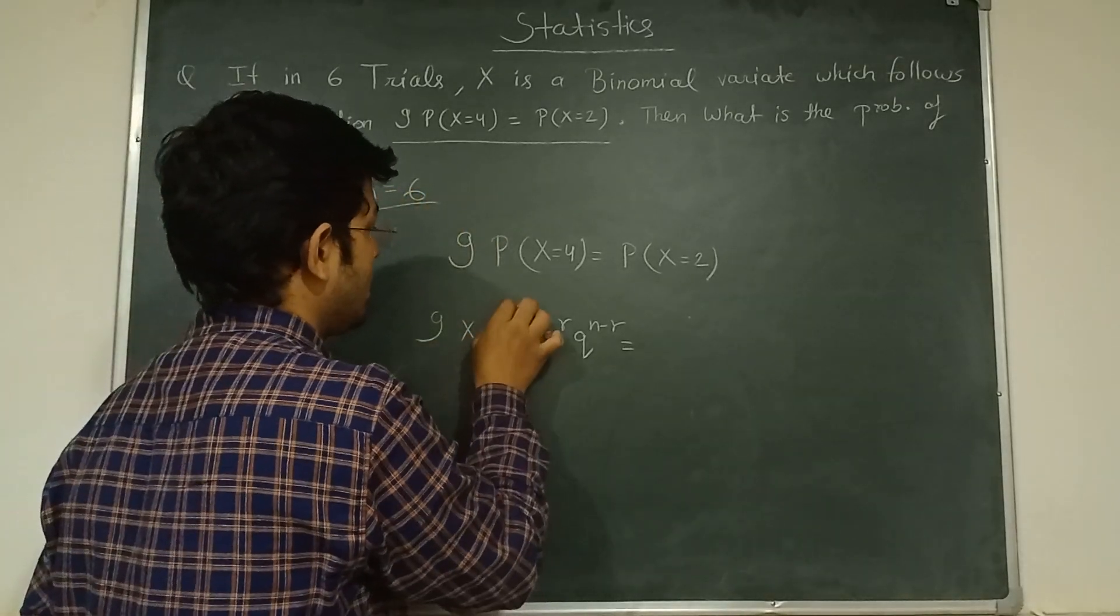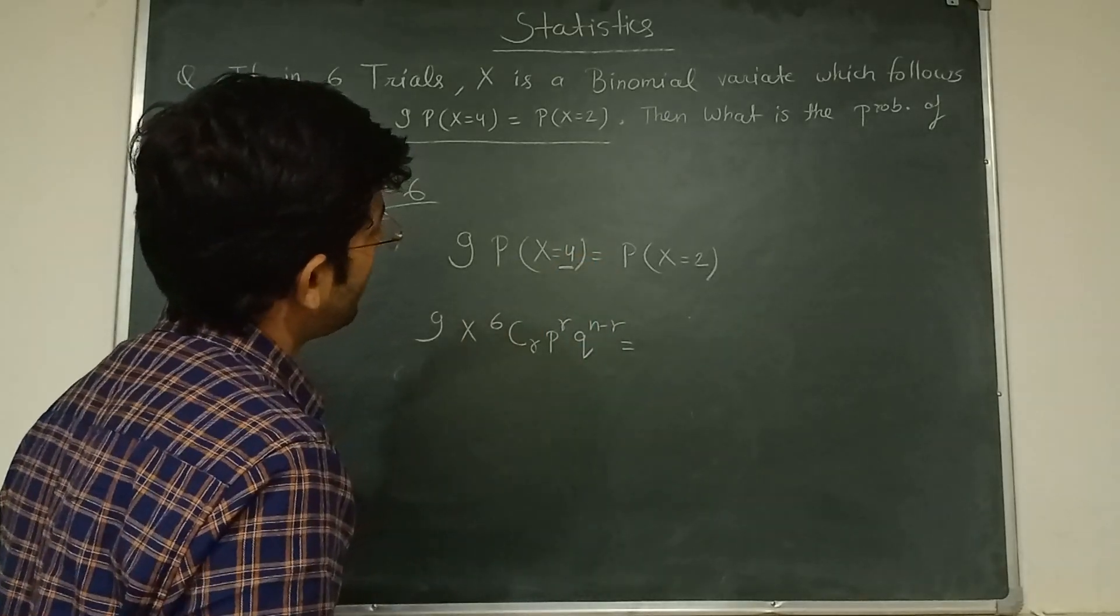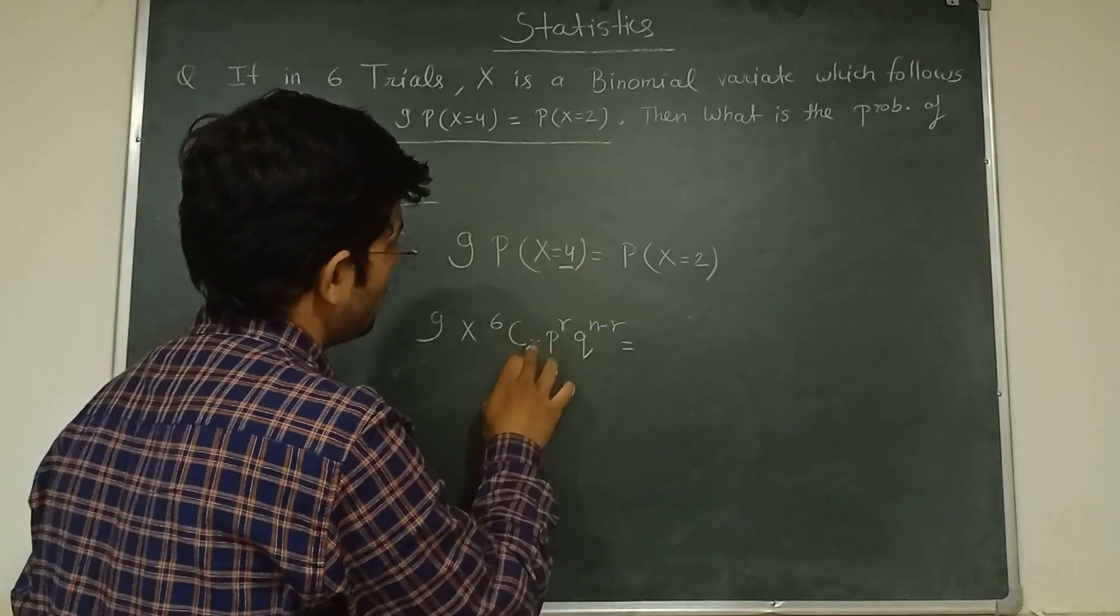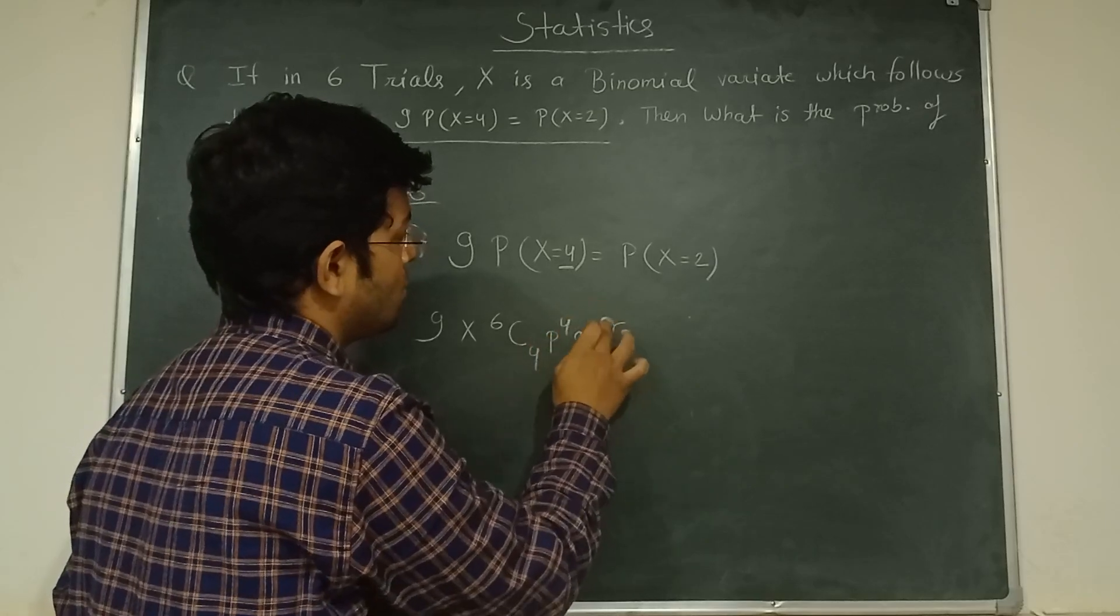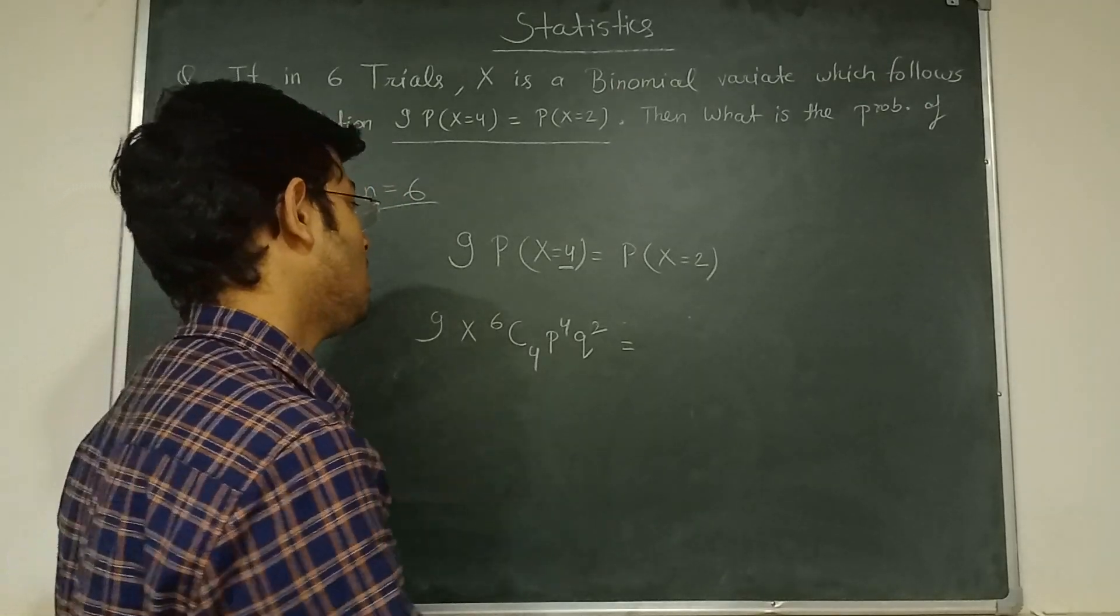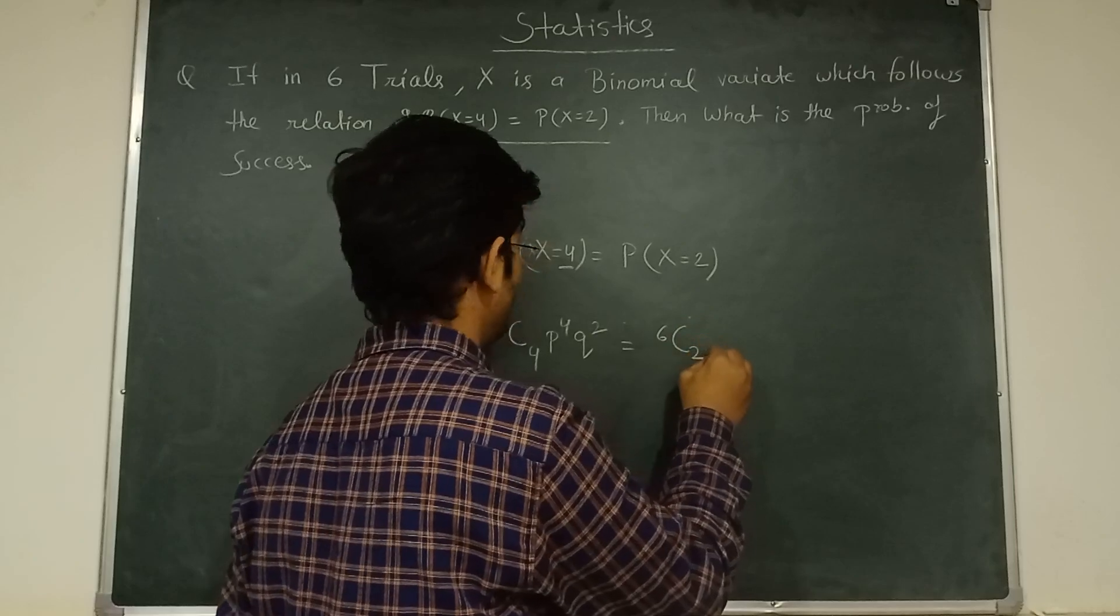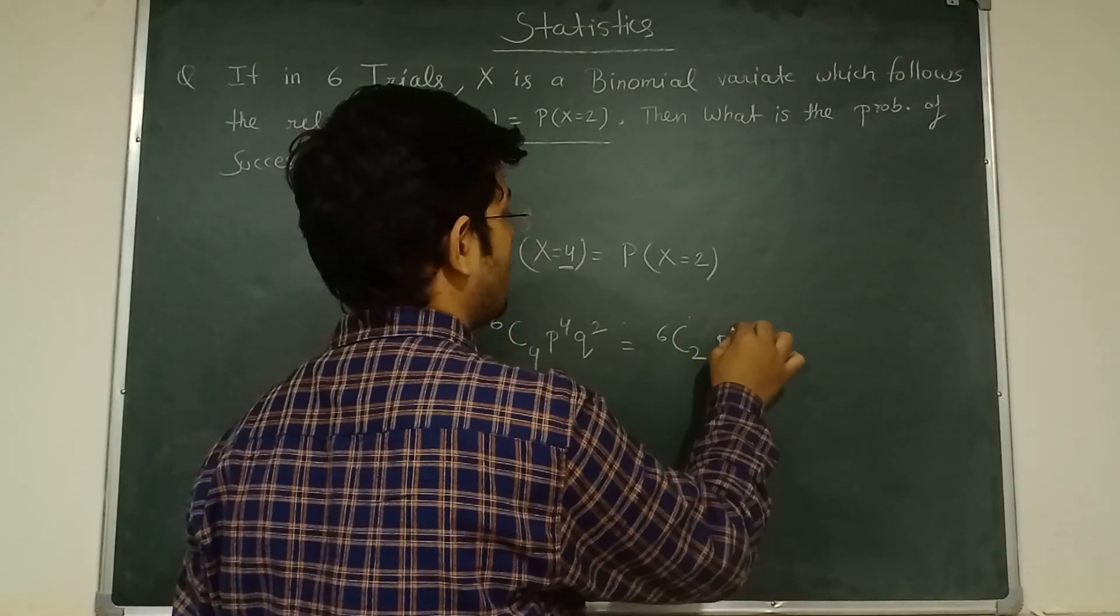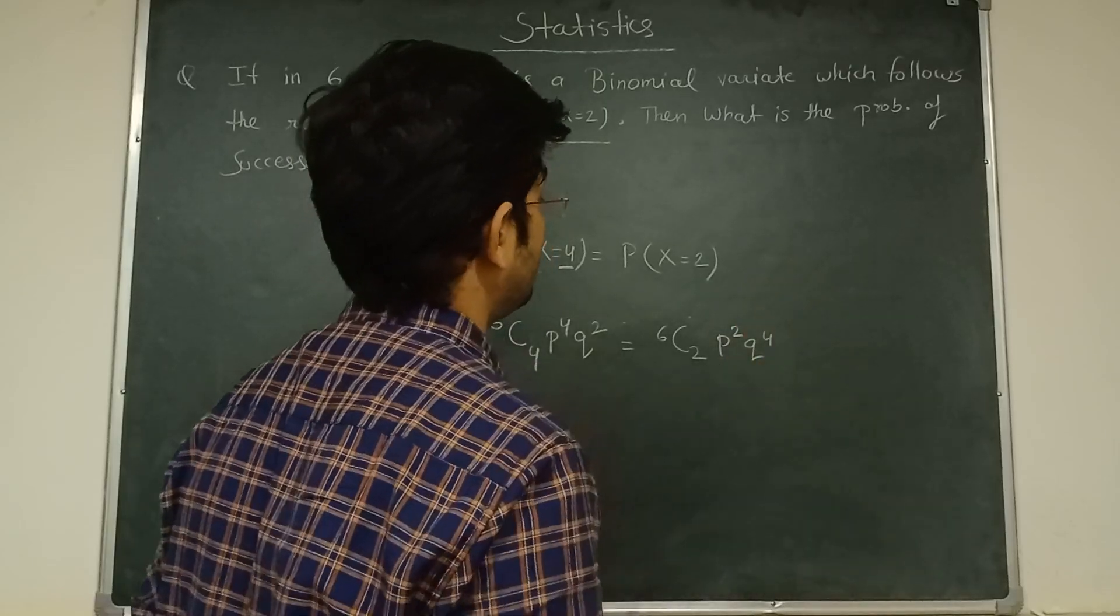Similarly, if we have given n=6, so P(6,4) and the value of r is 4, and this is 2. Now 6C4 × p^4 × q^2 = 6C2 × p^2 × q^4. Now just solve it.